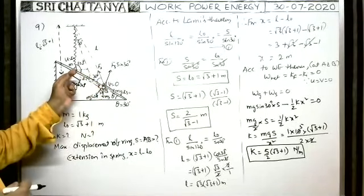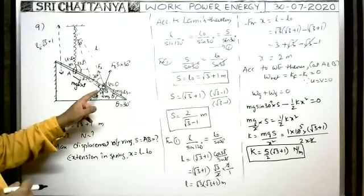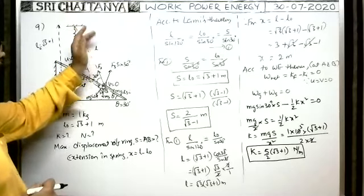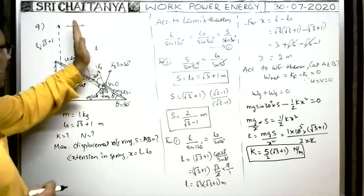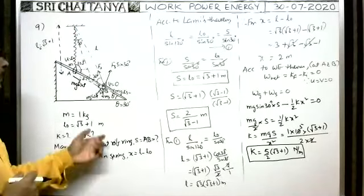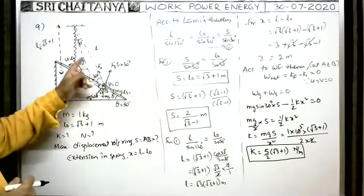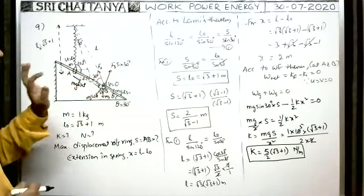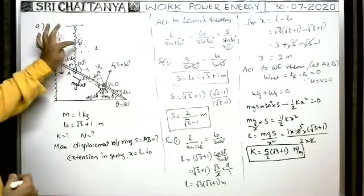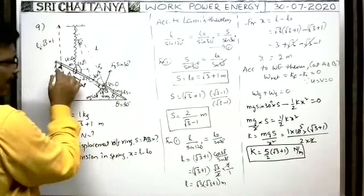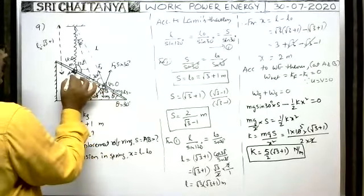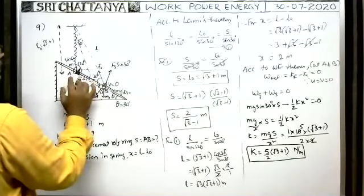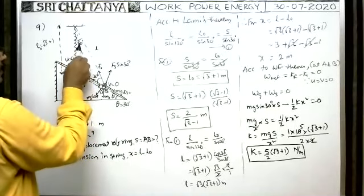Whenever velocity becomes zero, what is the displacement of the ring? What is the spring constant? One more condition is given: whenever the ring comes to rest, the spring makes an angle of 30 degrees with the vertical. So, the angle between the original position of the spring and the rod is: 90 plus 30 equals 120 degrees. Since the rod makes 30 degrees with horizontal, and we have 30 degrees given in the problem, in this triangle all three angles are known — it is 30 degrees, 120 degrees, and 30 degrees.